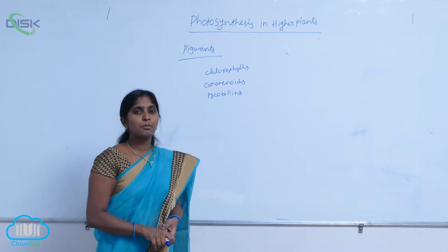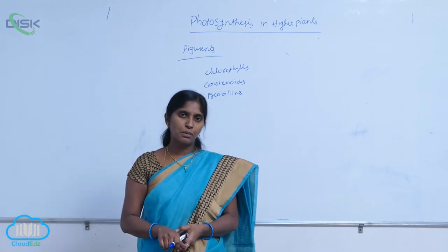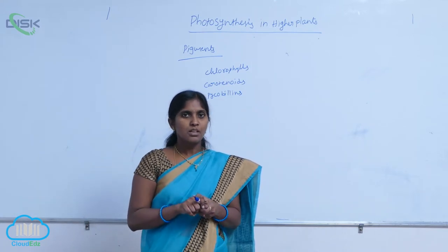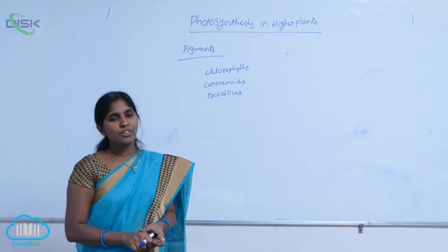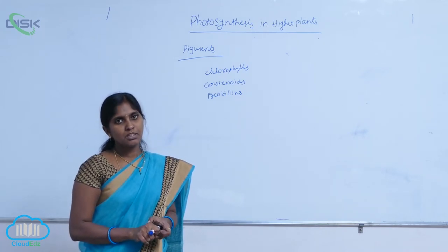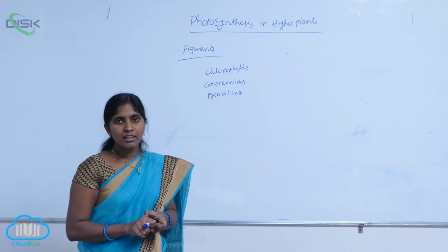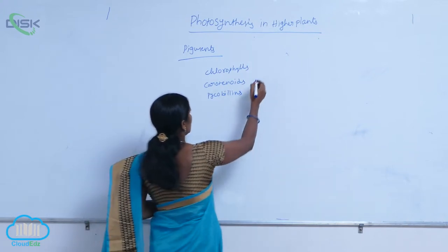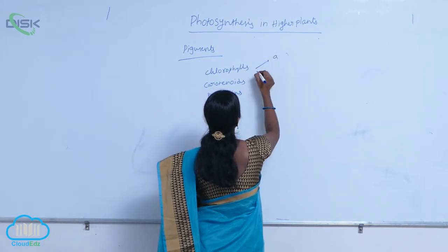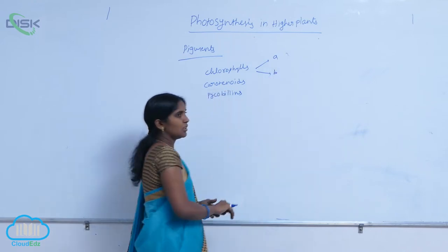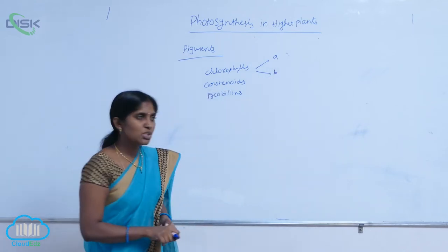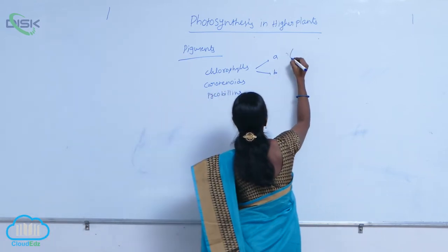These three pigments are present as photosynthetic pigments universally. Chlorophylls are the basic pigments present in the chloroplast. They are again basically chlorophyll A and chlorophyll B. The chlorophyll A gives the coloration of blue-green.